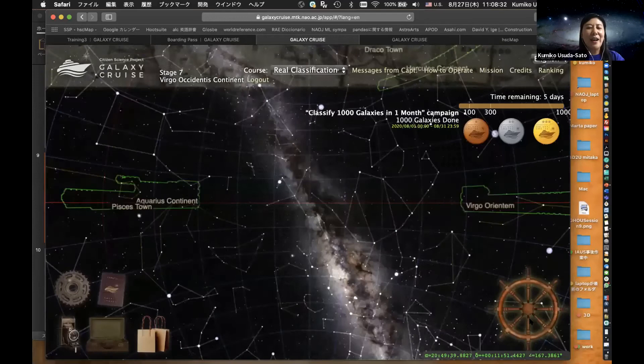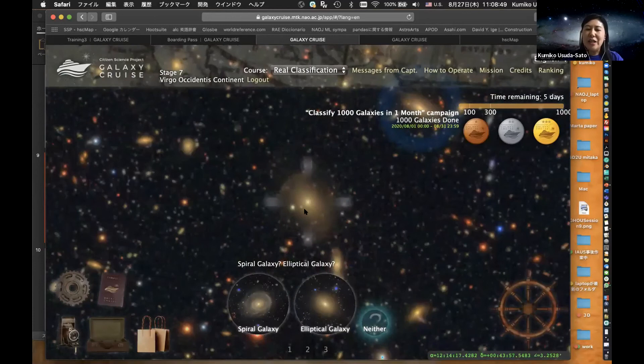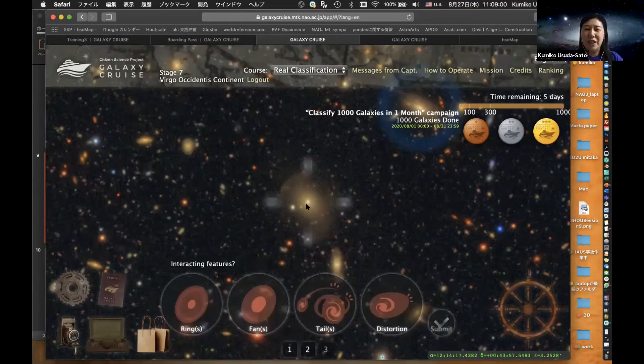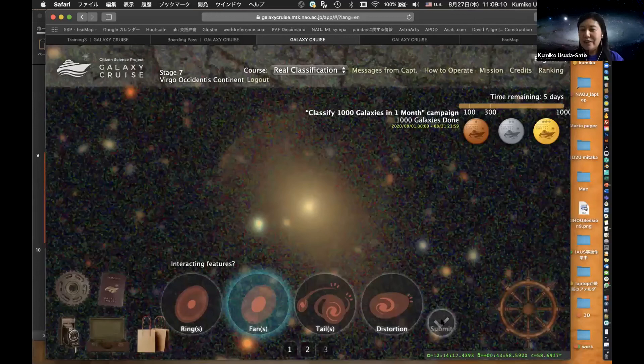When you want to classify a galaxy, please click this wheel, and a galaxy comes out at the center of the screen. Look carefully. You will answer three questions per one galaxy, same as lesson one, lesson two, and lesson three. Look at this galaxy—you can enlarge it. Is this galaxy spiral or elliptical? Maybe elliptical. Is this galaxy interacting or not interacting? Maybe interacting. What kind of feature do you see? Look carefully—around the galaxy itself, you see some fan feature. I think this is a fan. And submit your result.